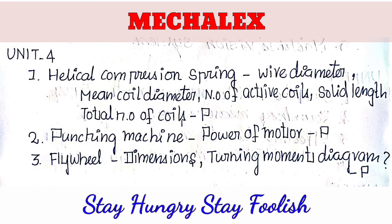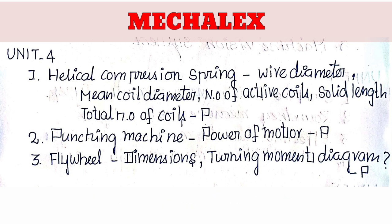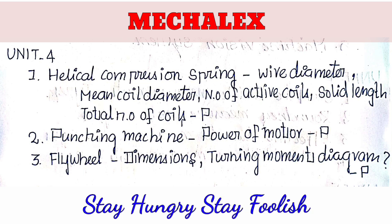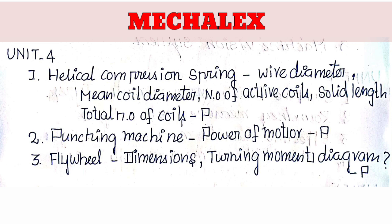There are 3 topics in this unit. First: Helical Compression Spring — finding the wire diameter, mean coil diameter, number of active coils, solid length, and total number of coils. We will ask for 2 questions on this topic.